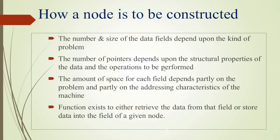for a polynomial we would have two data fields and one link field. For a binary tree we would have one data field and two link fields — left and right. So it all depends upon the problem, and the amount of space for each field, whether data field or link field, depends upon the problem.